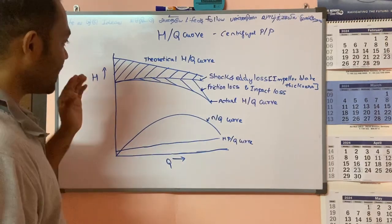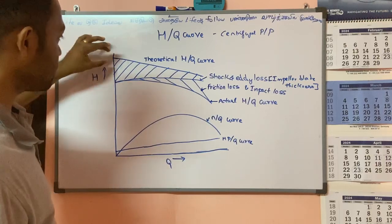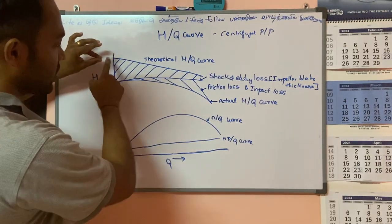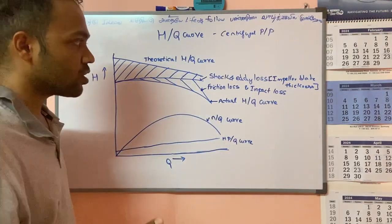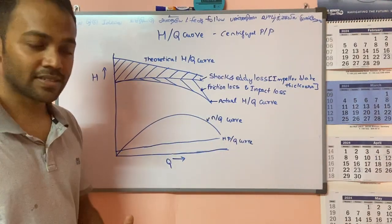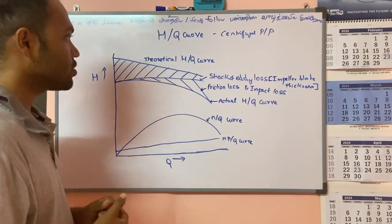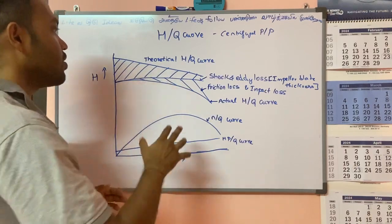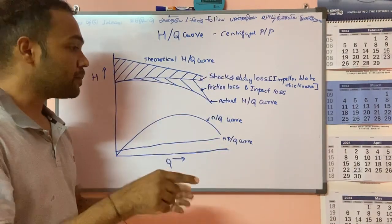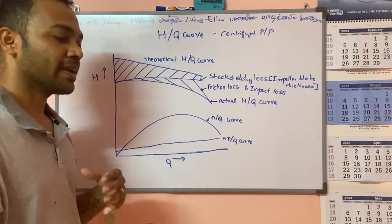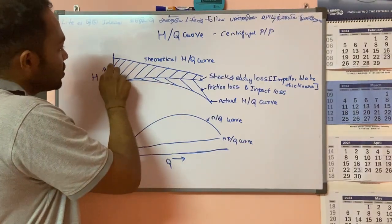You see here this maximum head with minimum throughput condition, but practically it is not possible due to a lot of factors like impeller blade thickness and losses like frictional losses and impact losses. So practically, due to the shock and eddy losses which are caused by impeller blade thickness and other mechanical considerations, the discharge is reduced to a little extent.